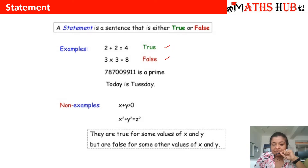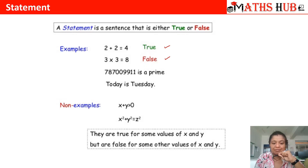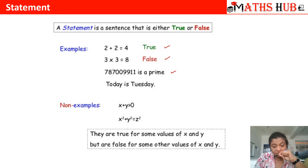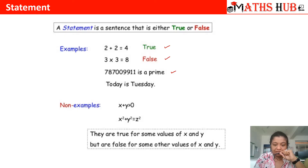7,800,991 is a prime. If it is a prime number, everybody will say it is prime — it will not happen that some say it is prime and some say it is not. So again, this is a statement. 'Today is Tuesday' — if it is Tuesday, everybody would say yes; if it is not Tuesday, everybody would deny it. So this is also a statement.